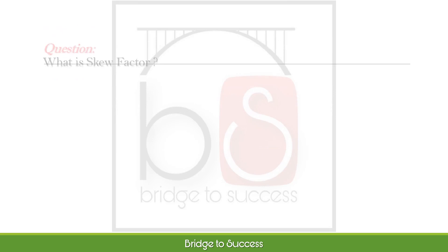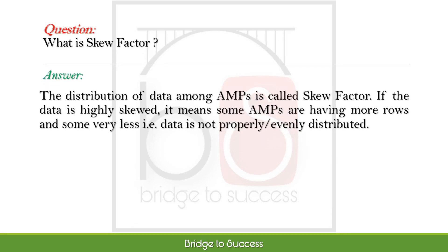What is skew factor? The distribution of data among AMPs is called skew factor. If the data is highly skewed, it means some AMPs are having more rows and some very less — that is, data is not properly or evenly distributed.